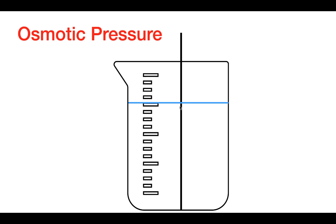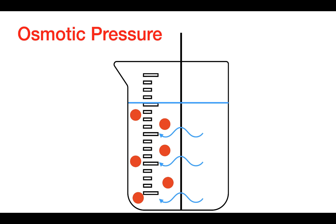So let's take a look at how water is going to move across this barrier when we add solute to one side. Let's add solute to one side of the beaker and examine which direction water is going to flow. The answer is that water flows from the area of low solute concentration to the area of high solute concentration.